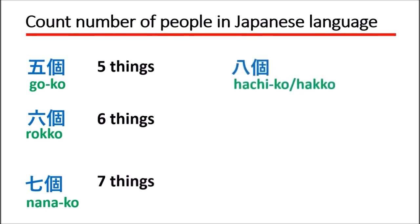八個 or 八個, which means eight things. For eight things, you can say two sounds: 八個 or 八個. It has the same meaning in English, which means eight things.